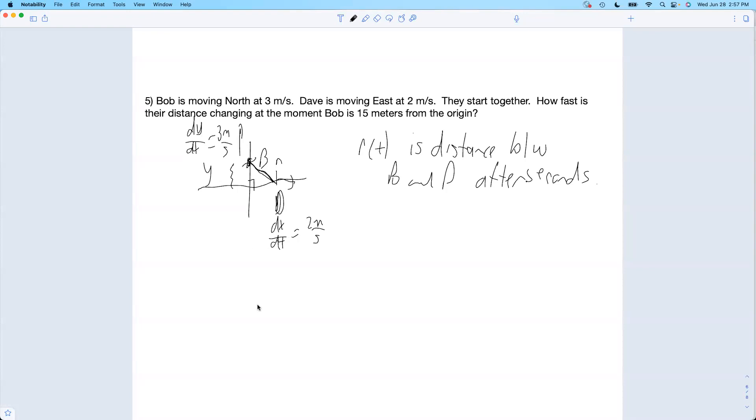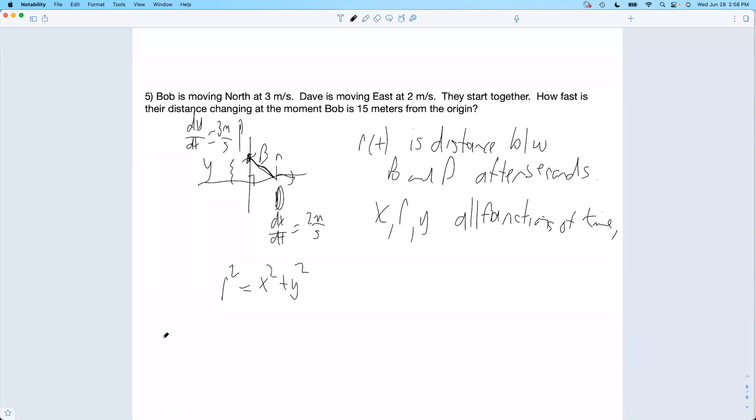Okay, so what is r here? Well, we got ourselves a right triangle here. r squared is x squared plus y squared. Notice x, r, y, they're all functions of time. All I'm going to do is just take some derivatives.